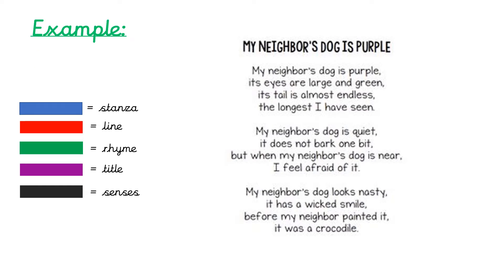Now we've gone through the features of a poem, we will be looking at an example poem and how I would identify those features within it. I've got a colour key showing which different feature I will be highlighting. I'm going to read the poem first — listen carefully, then listen as I work through identifying the different features within the text. At the top you can see the title: My Neighbour's Dog is Purple.